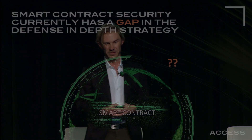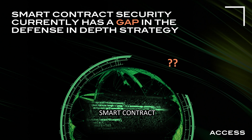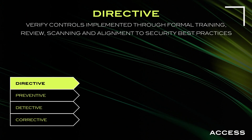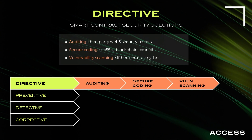You'll notice there's a gap — something that doesn't really exist in a mature form right now in the defense in depth strategy. There's an exposure in that cycle: preventive controls. This is before an incident occurs on assets that already have a threat — how do you prevent that from happening? It's quite a challenge because you're trying to balance prevention against censorship and centralized control.